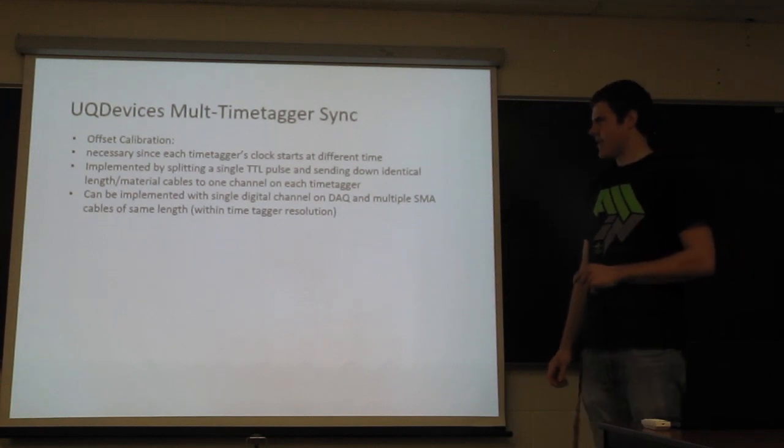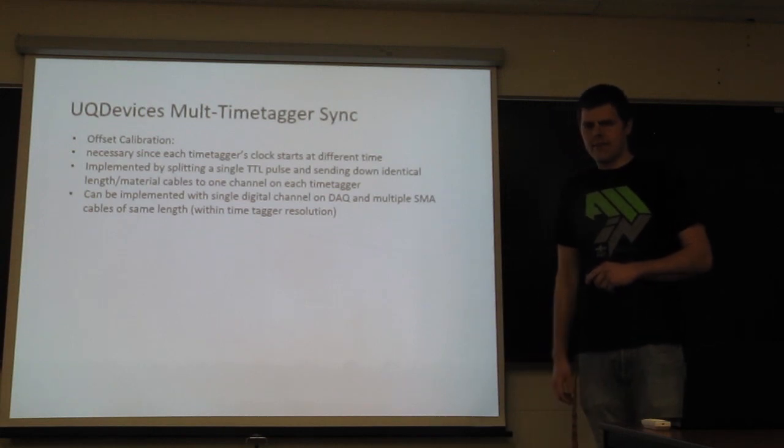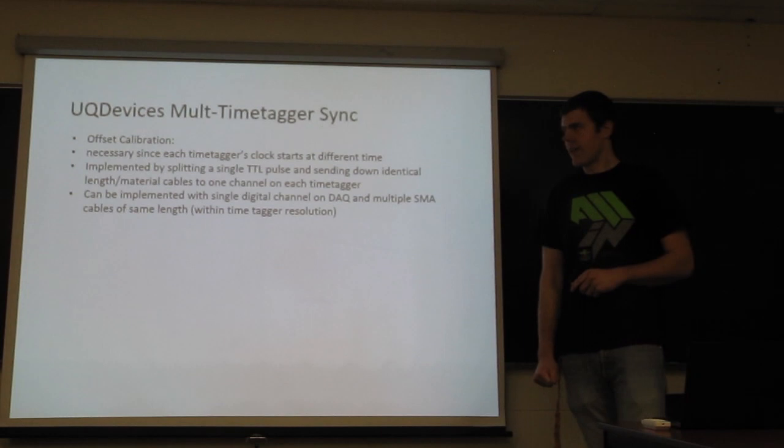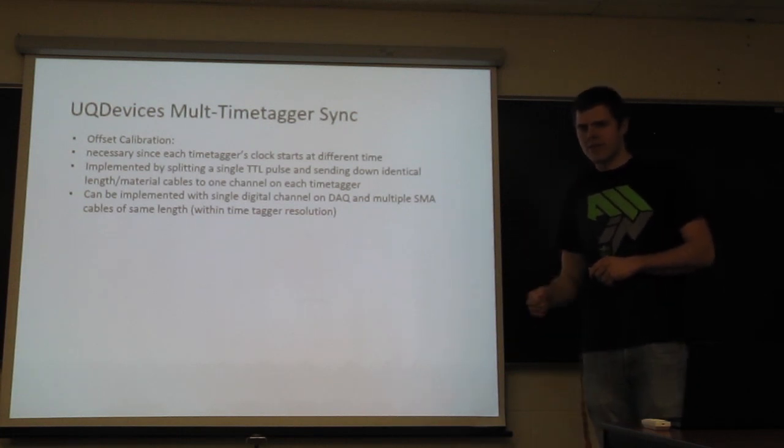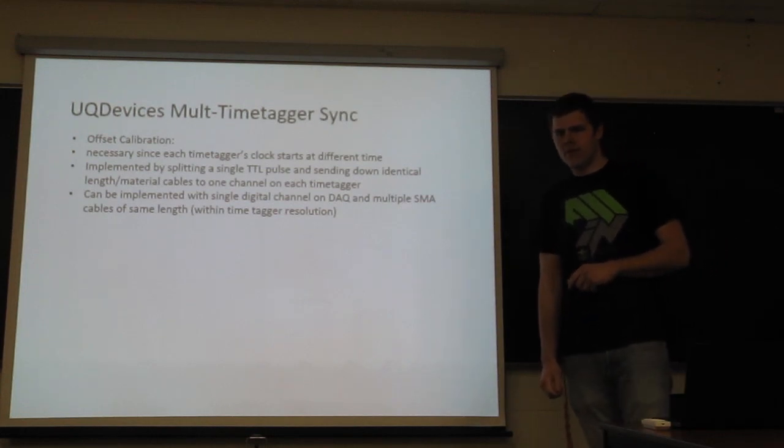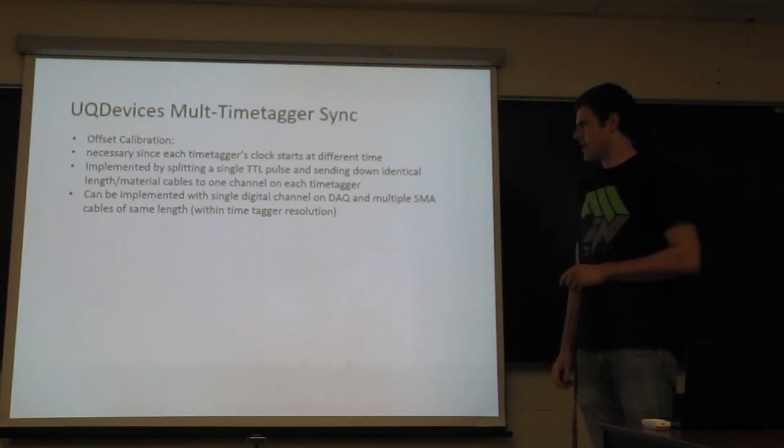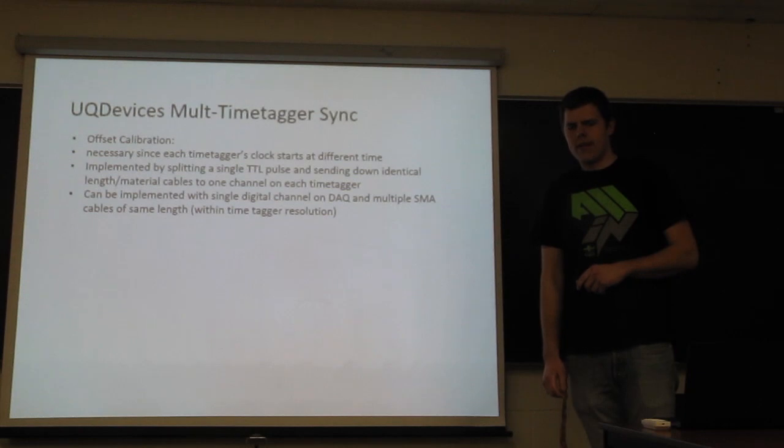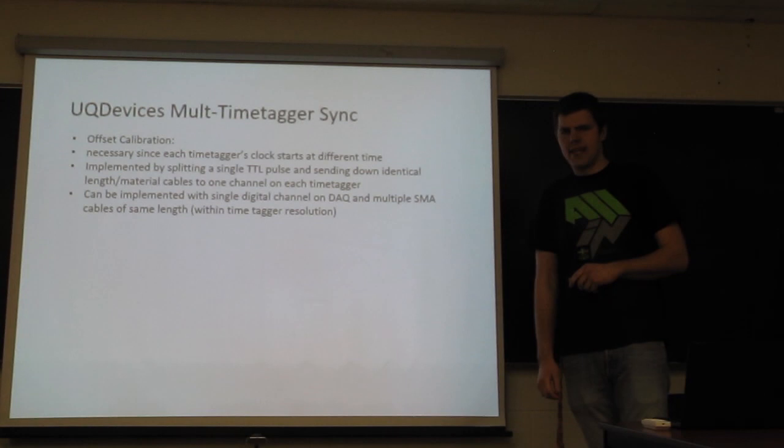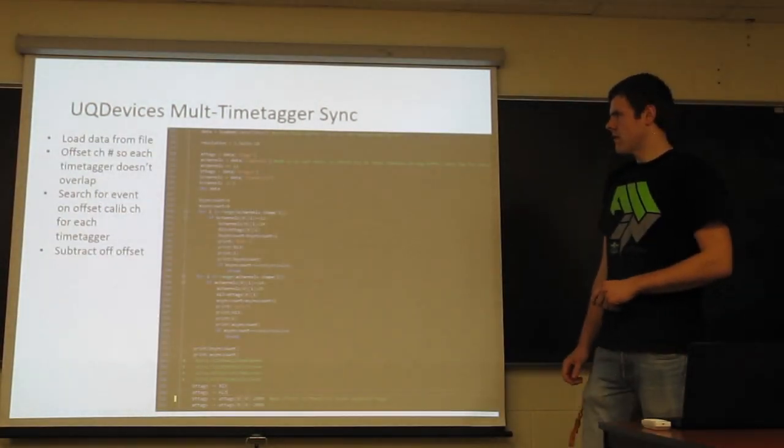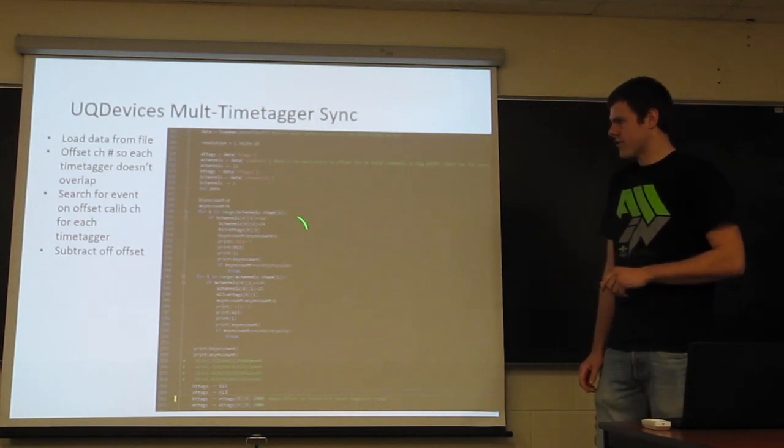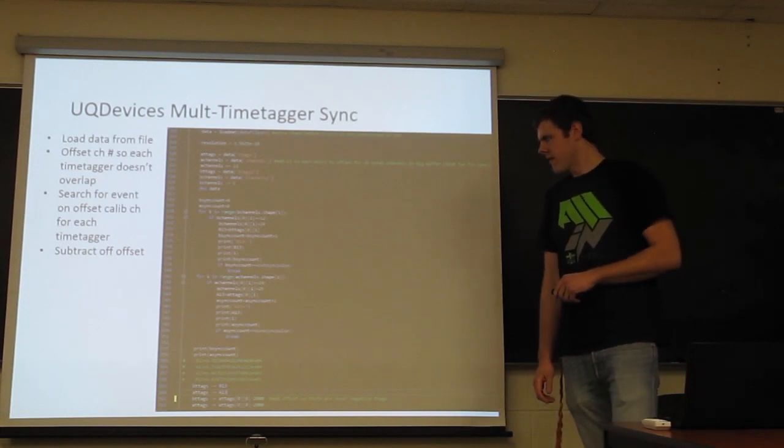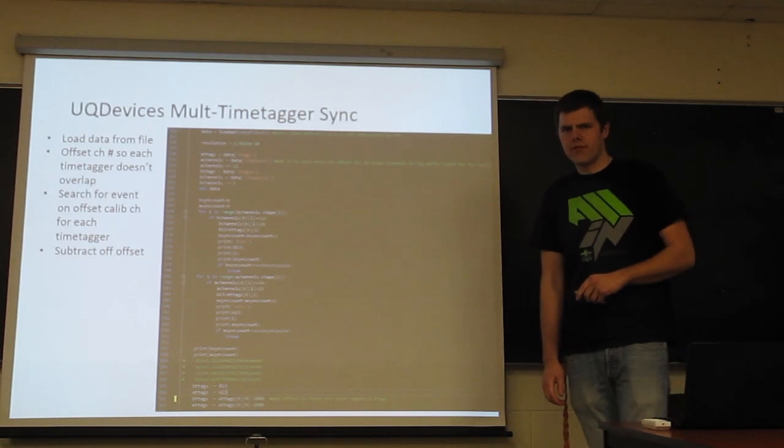So now about the offset calibration. So when you turn on the time tagger, the clock starts automatically. So if you turn on these two time taggers, their clocks are going to start at different times. So you need to send in a signal at the same time so you know what time is t equals zero for each time tagger. This can be implemented by taking a TTL pulse and splitting it from its source and sending it down identically length cables to each time tagger to a specific channel. And then you know that when the time is registered for a signal on that channel, that that time is identical for each time tagger. So to implement this offset, you need to load the data and you need to search for the event from your reserved offset channel. And then you need to subtract off that offset for each time tagger.